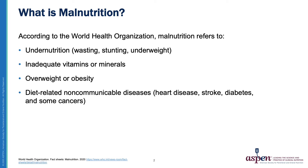Undernutrition, which includes wasting, stunting of growth, and being underweight, could also be because of the lack of vitamins and minerals. Being obese is also included in malnutrition. And finally, diet-related non-communicable diseases such as heart disease, stroke, diabetes, and some forms of cancer.